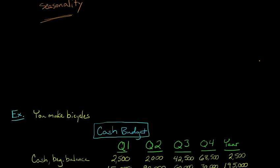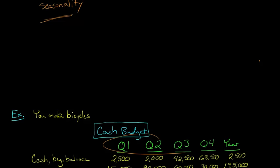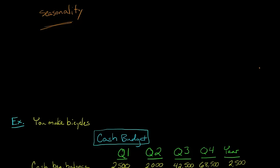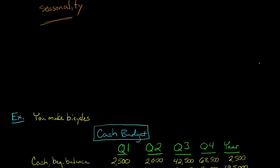When we start out with the cash budget, the first thing is: what is our beginning balance? Let's focus on quarter one. I've written out all the quarters and the year total, since we're doing this on a quarterly basis. So the first quarter, we're starting out with a cash balance of $2,500. At the beginning of this year, we look at the bank account and we've got $2,500.